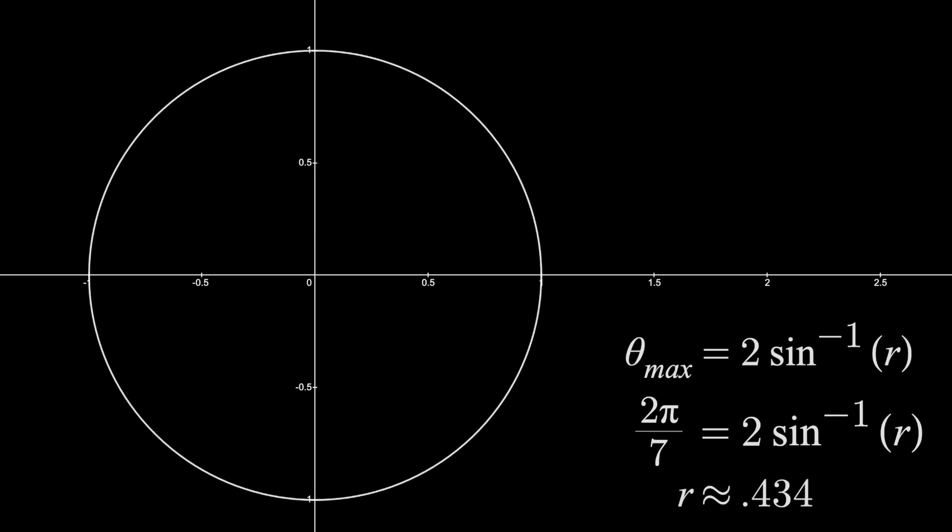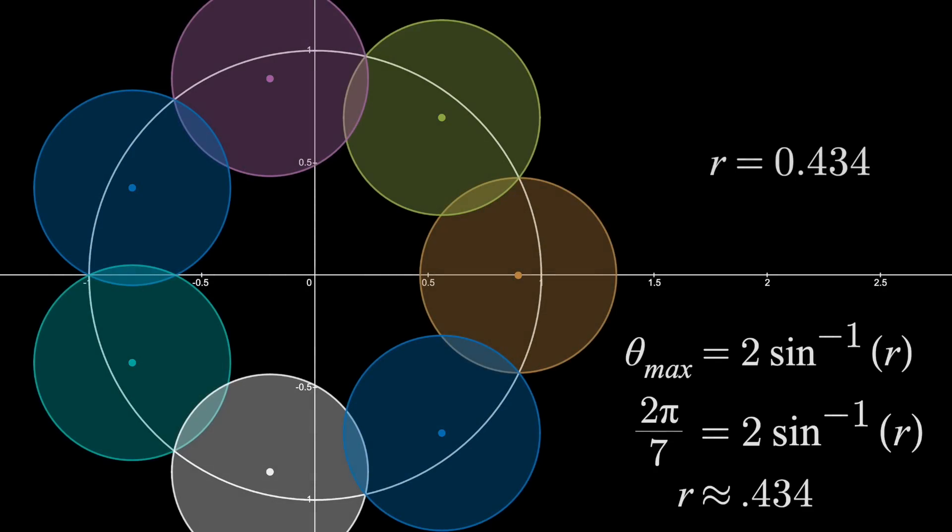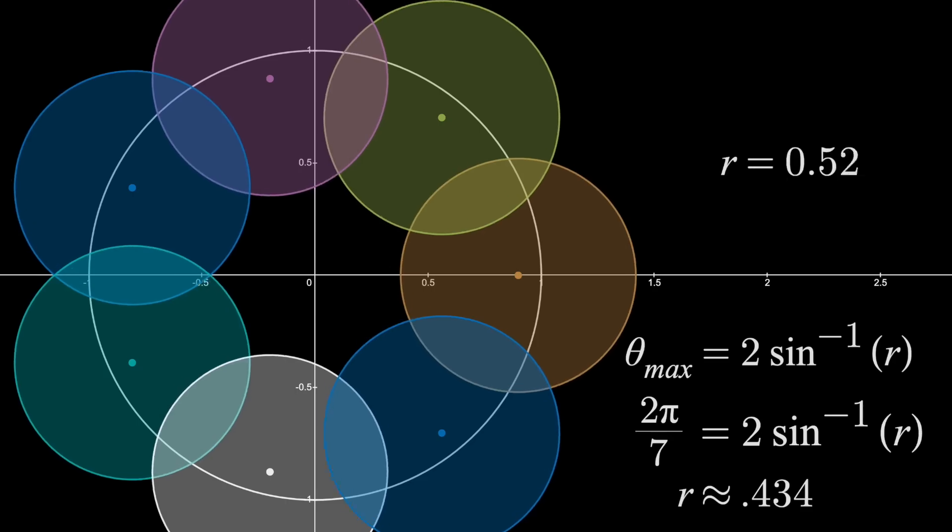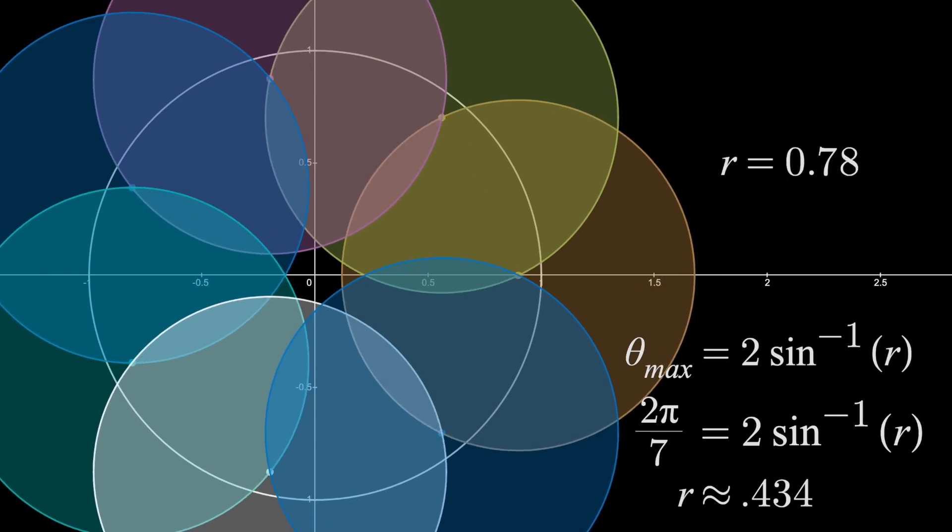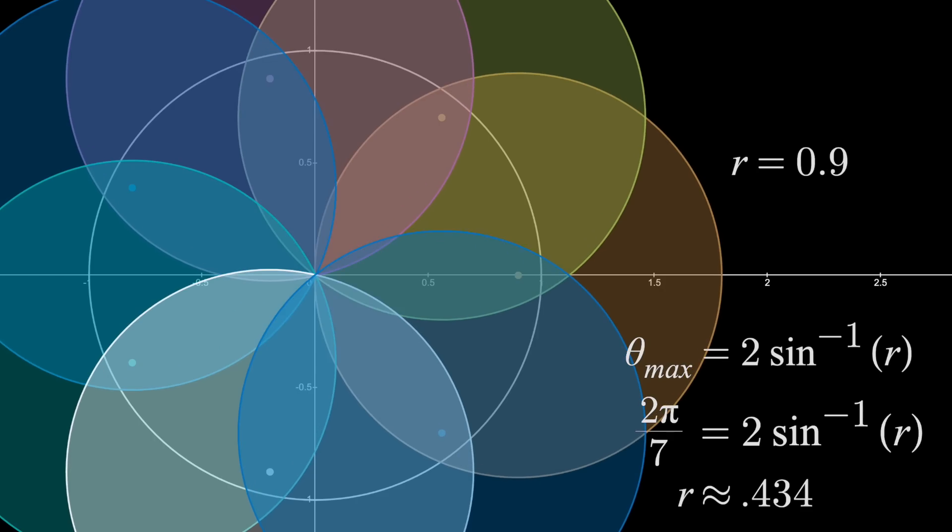However, if we set up 7 circles of that radius, they do absolutely cover the entire perimeter when set up optimally. But now, they don't cover the center of the circle. So this radius doesn't work. We can increase the radius until the entire circle is covered, but this isn't optimal.